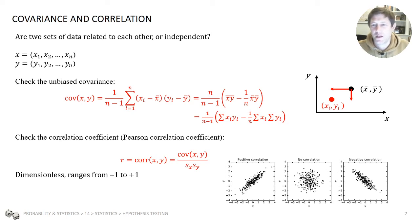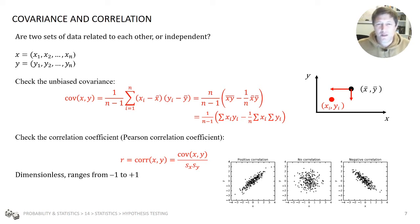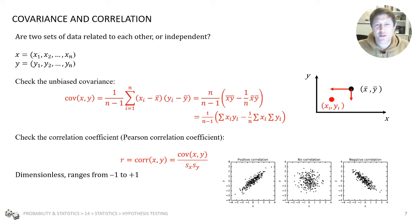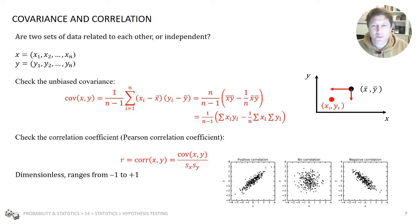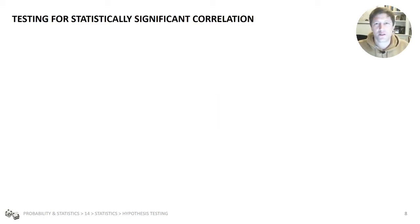A positive correlation looks like an upward trend, a negative correlation looks like a downward trend, and no correlation shows a scatter. The correlation coefficient gives information on this, ranging from minus one to one.